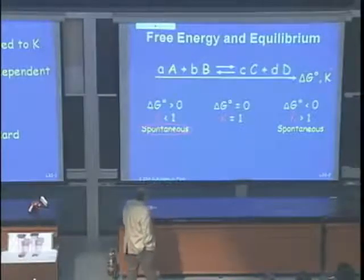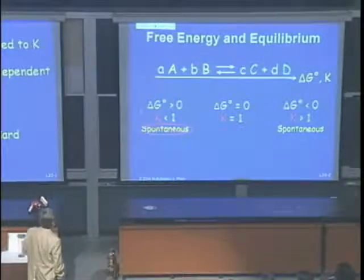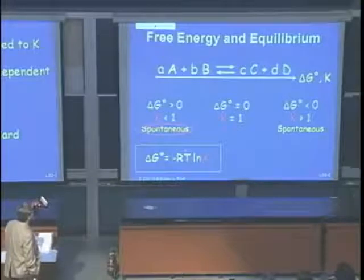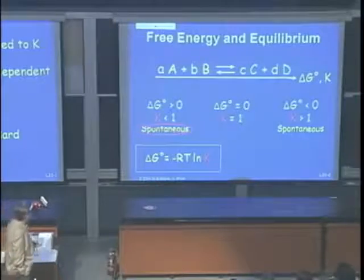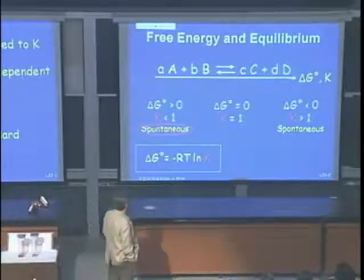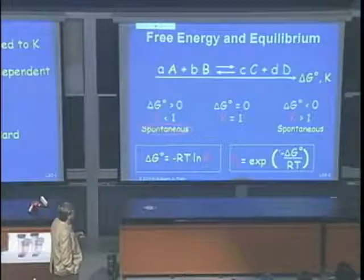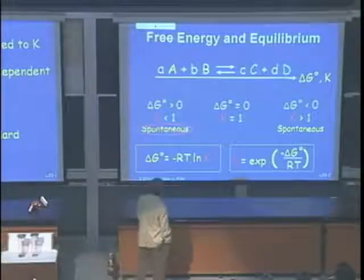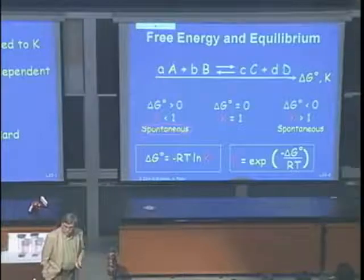The relationship between delta G-naught and K is: delta G-naught = -RT ln K, where R is the gas constant and T is temperature. Rearranging: K = e^(−ΔG°/RT). This ties delta G and K together as dependent quantities.